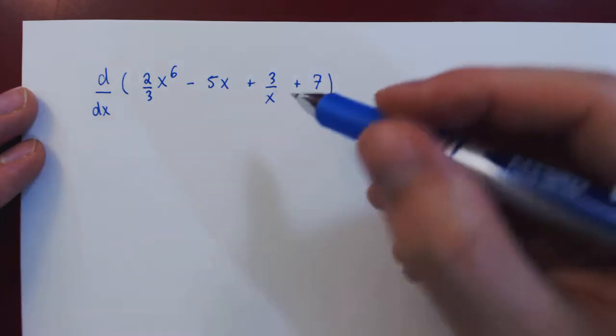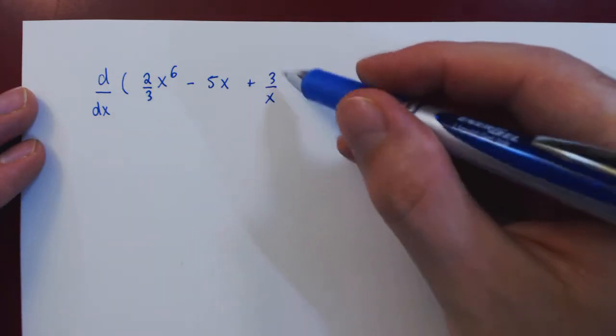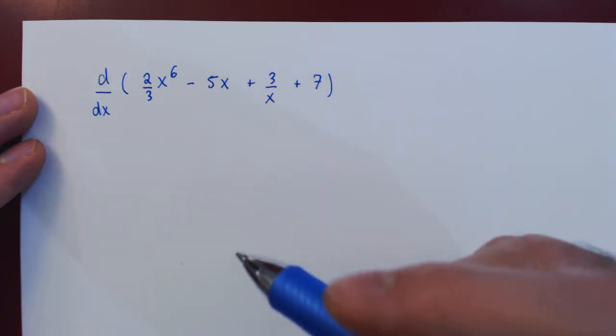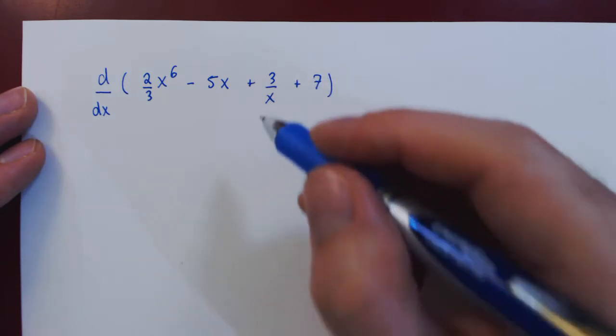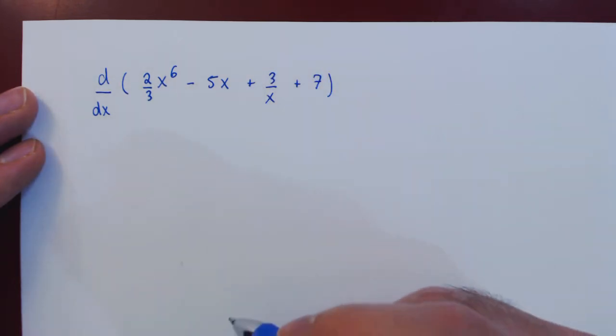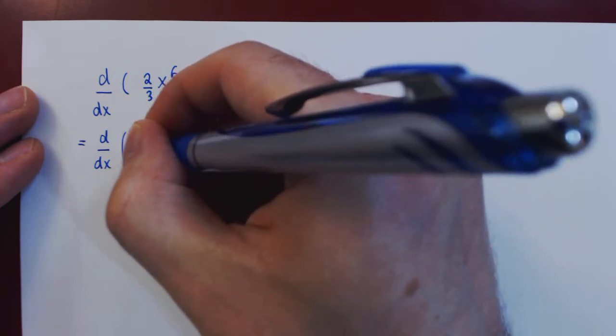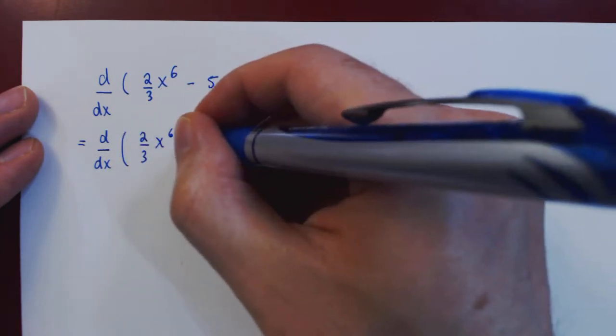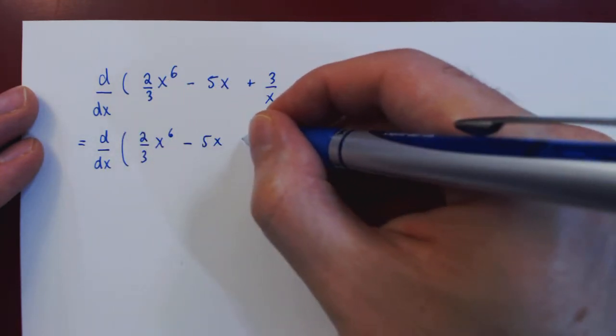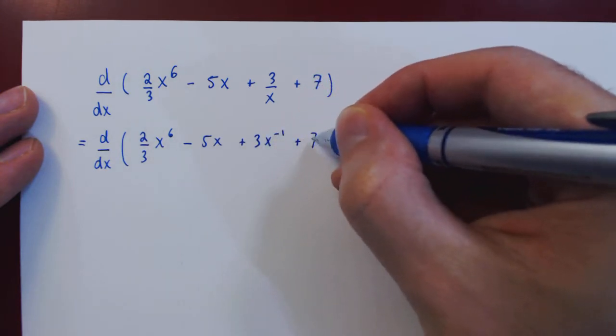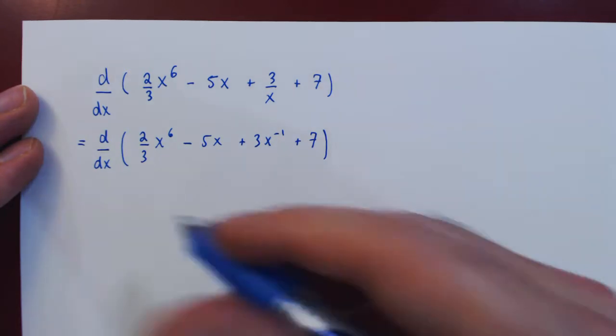Now before we differentiate, we will rewrite the function 3 over x as 3 times x to the negative 1. So we bring x back up to avoid the unnecessary quotient here. And now we're good to go.